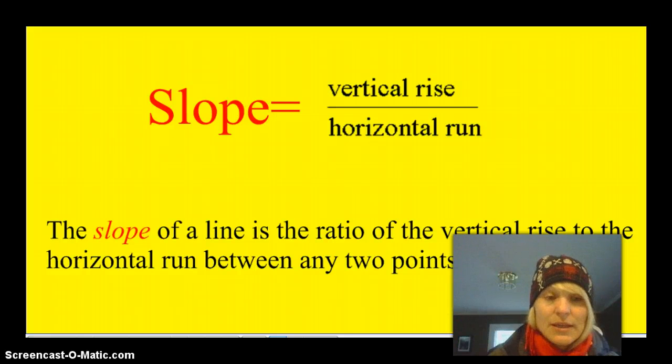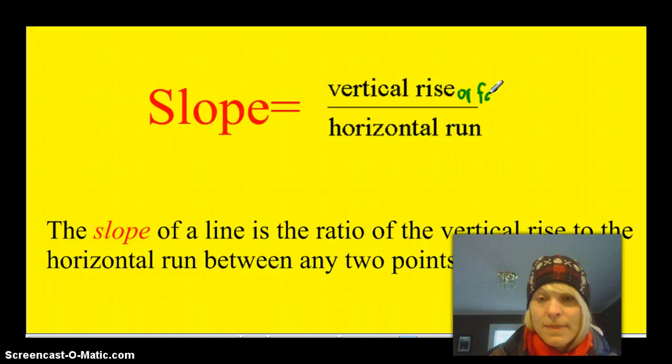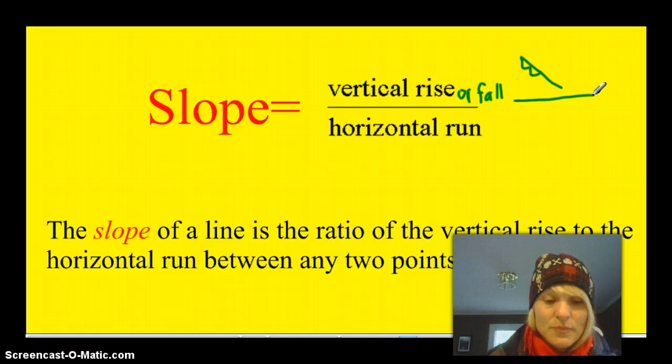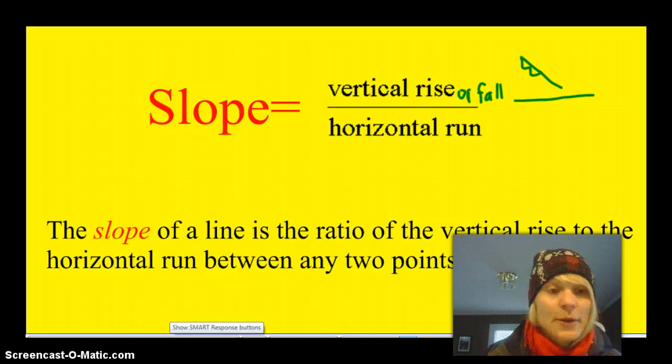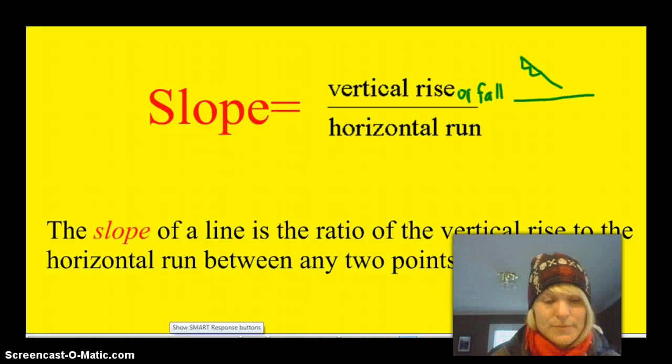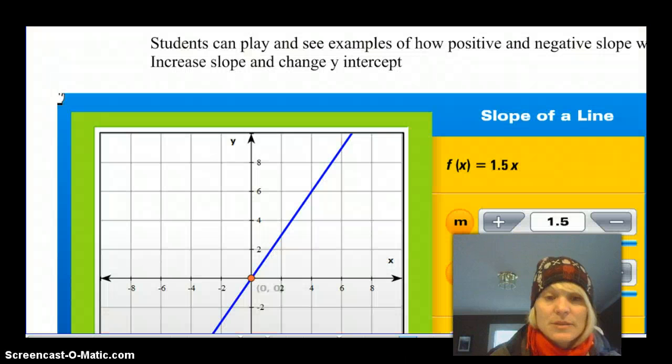Remember when we're calculating slope, we look at the vertical rise. Sometimes it's not a rise. I don't like that word because sometimes it's a fall if it's negative. So we really look at the rise or fall. Because on a negative slope, it's going down, not up. And over the vertical run, which is the horizontal distance. And that is a ratio. So again, I didn't mention that earlier, but slopes are ratios.